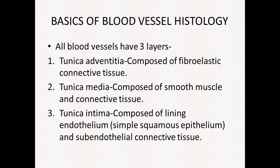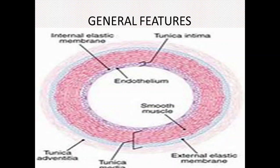This slide demonstrates the basics of the histology of any blood vessel. All blood vessels have three layers or coats: tunica adventitia, the outermost coat, composed of fibro-elastic connective tissue; tunica media, the middle coat, composed of smooth muscle and connective tissue; and tunica intima, the innermost coat, composed of lining endothelium, which is simple squamous epithelium, and subendothelial connective tissue. This image shows the three coats along with the internal elastic membrane, which lies between the tunica intima and the tunica media, and the external elastic membrane, which lies between the tunica media and the tunica adventitia.